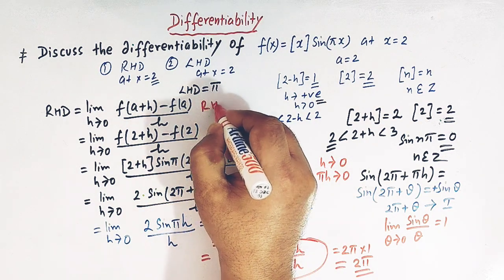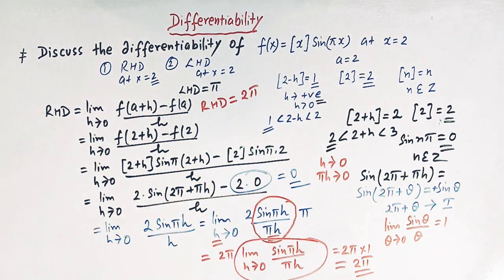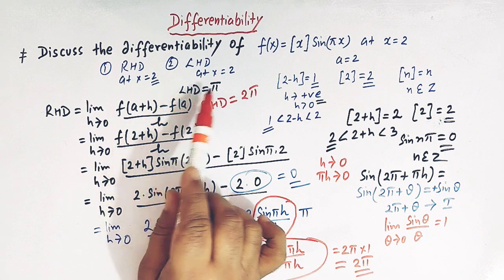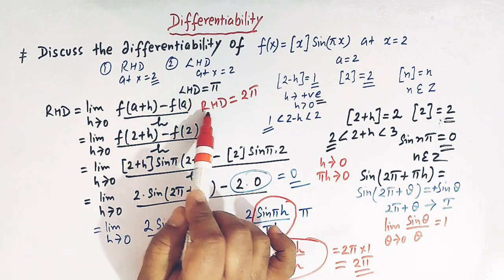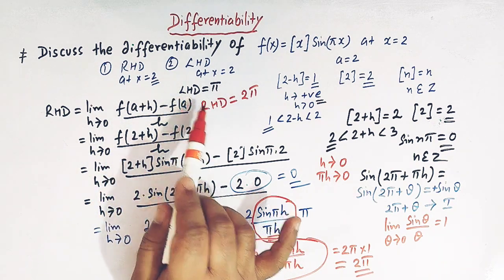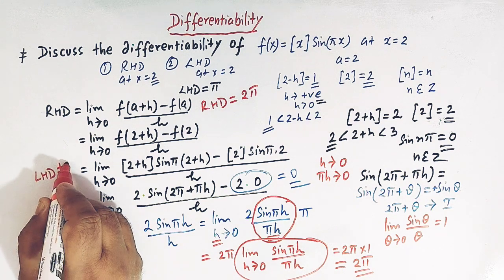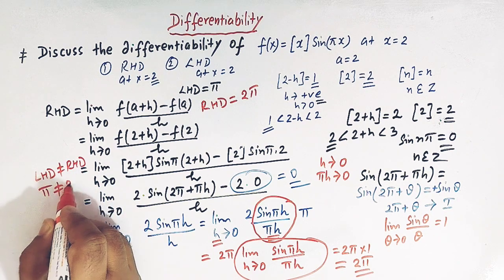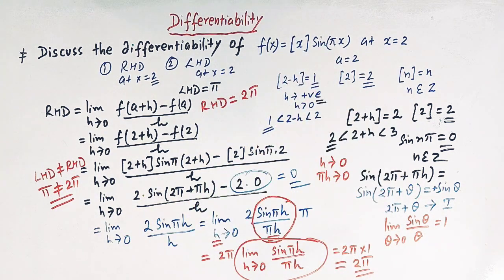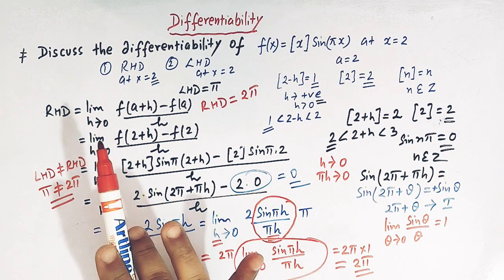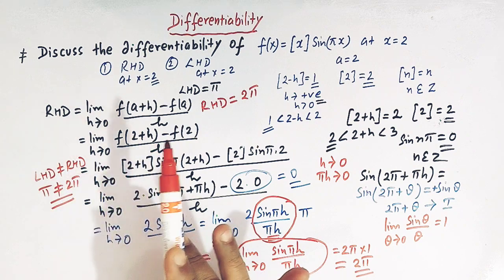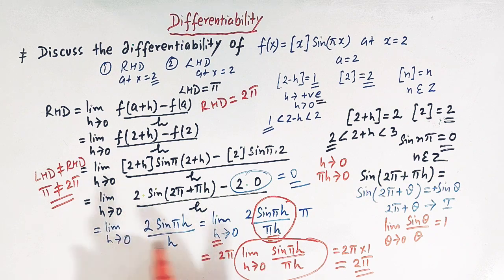So viewers, from this discussion we have arrived at the result that the left-hand derivative is π and the right-hand derivative is 2π. Although both derivatives are finite, they are not equal — π ≠ 2π. Therefore we can claim that this function is not differentiable at x = 2. When the right-hand derivative and the left-hand derivative are not equal, the function is not differentiable at the given point.